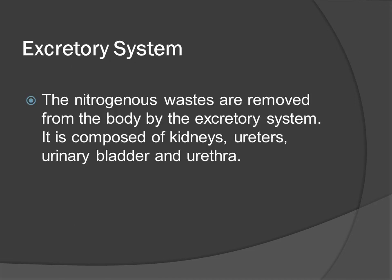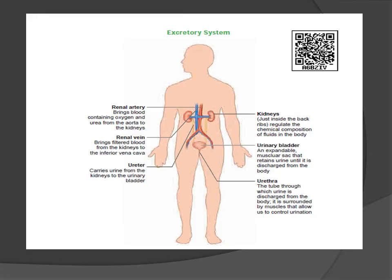The excretory system removes nitrogenous wastes from the body. It is composed of kidneys, urinary bladder and urethra. The renal artery brings blood containing oxygen and urea from the artery to the kidneys. The renal vein brings filtered blood from the kidneys to the inferior vena cava. The ureter carries urine from the kidney to the urinary bladder. The urinary bladder is an expandable muscular sac that retains urine until it is discharged from the body. The urethra is the tube through which urine is discharged from the body, surrounded by muscles that allow us to control urination.